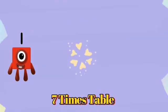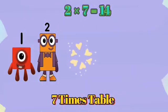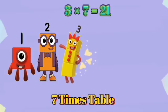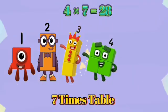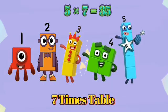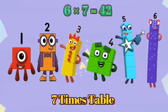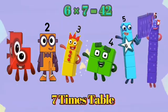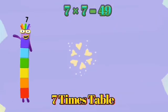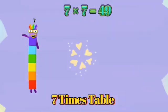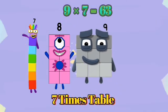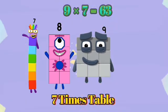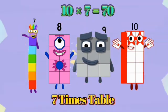1 times 7 is 7. 2 times 7 is 14. 3 times 7 is 21. 4 times 7 is 28. 5 times 7 is 35. 6 times 7 is 42. 7 times 7 is 49. 8 times 7 is 56. 9 times 7 is 63. 10 times 7 is 70.